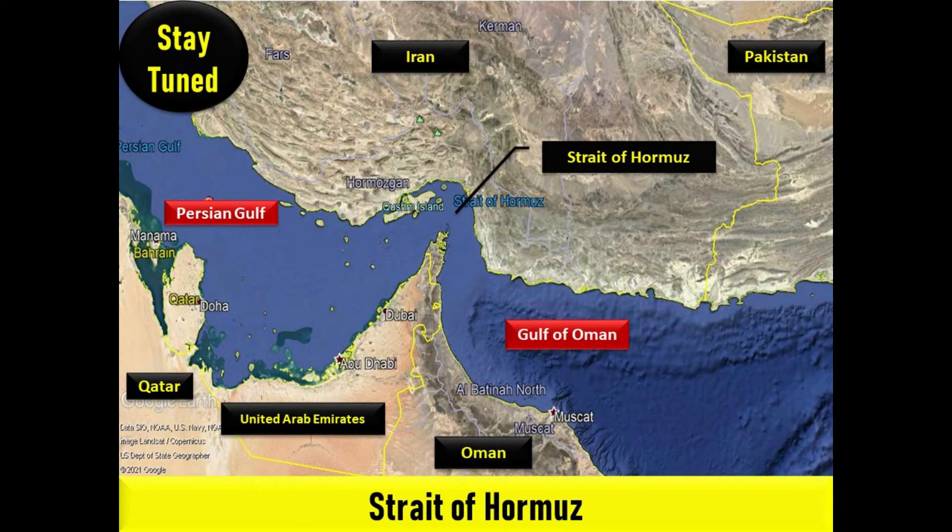The Strait of Hormuz is a strait between the Persian Gulf and the Gulf of Oman. It provides the only sea passage from the Persian Gulf to the open ocean and is one of the world's most strategically important choke points. On the north coast lies Iran, and on the south coast the United Arab Emirates and Musandam, an exclave of Oman. The strait is about 90 nautical miles long, with a width varying from about 52 to 21 nautical miles. A third of the world's liquefied natural gas and almost 25% of total global oil consumption passes through the strait, making it a highly important strategic location for international trade.